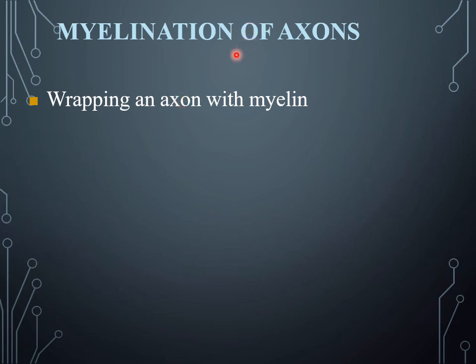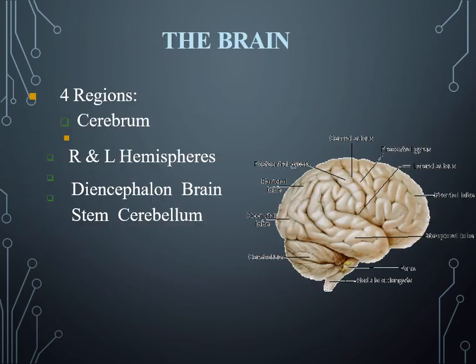Myelination of the axon is the wrapping of an axon with the myelin sheath, and this process is known as the myelination of the axon.